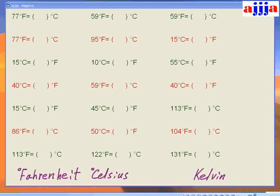Do you still remember the spelling — Fahrenheit? F-A-H-R-E-N-H-E-I-T, right? Fahrenheit. What about degree Celsius? That's easy. We also have one more, which is Kelvin. The difference between Celsius and Fahrenheit versus Kelvin is that we don't put a degree sign — just K, that's it. So we use degree F, degree C, and just K for Kelvin.